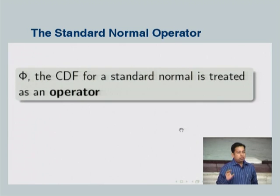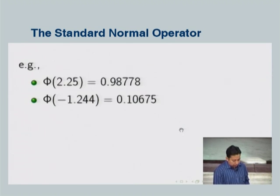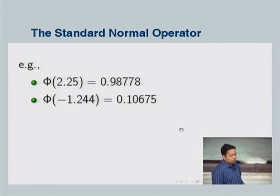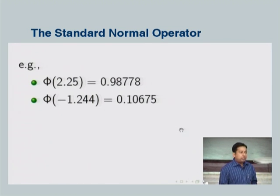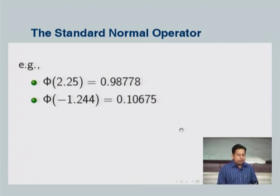The CDF is treated as an operator — you operate it on any value and it gives you another value. For example, applying phi on 2.25 gives a certain value; applying it on minus 1.244 gives 0.10675. This is the CDF of the standard normal random variable — for every value of z you get a value of the CDF, which we call the standard normal operator.